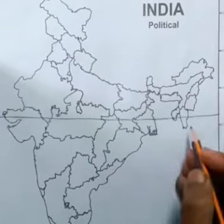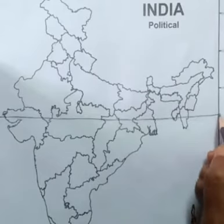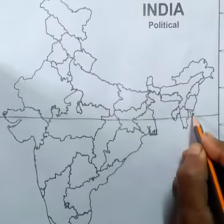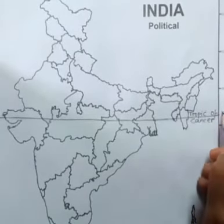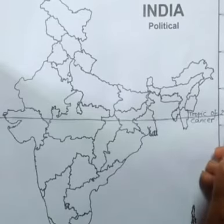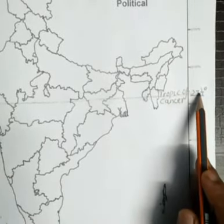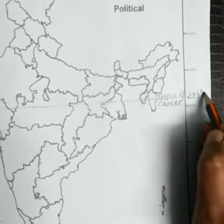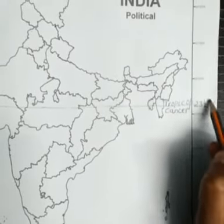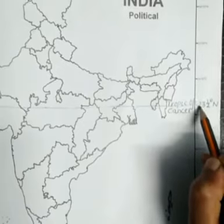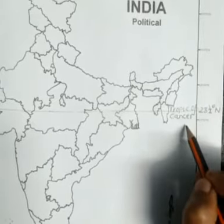The location of the Tropic of Cancer is 23 and a half degrees north. Here you have to write 'Tropic of Cancer, 23.5° North.' And 23 and a half degrees south will be the Tropic of Capricorn.